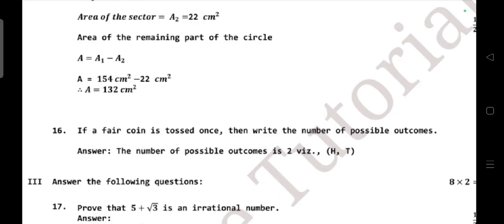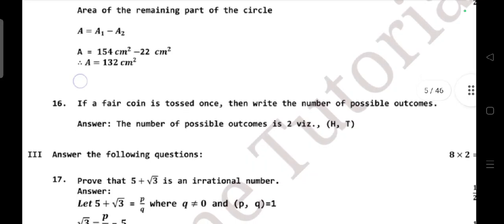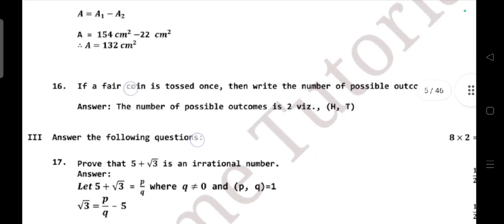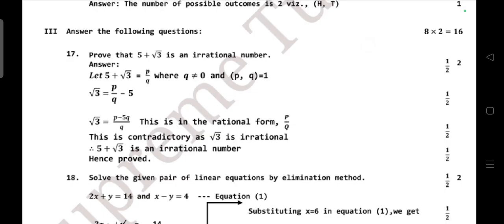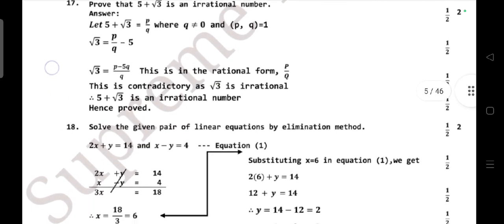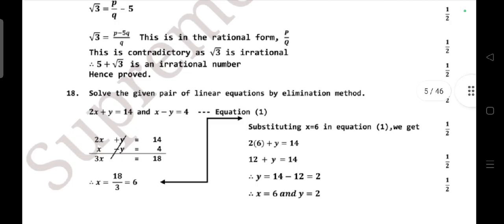Next main: answer the following questions, eight questions will be there, each carries two marks. Prove that 5 + 2√3 is an irrational number. So this is from your first chapter. Question number 18: solve the given pair of linear equations by elimination method: 2x + y = 14 and x - y = 4. So you will get x = 6 and y = 2.